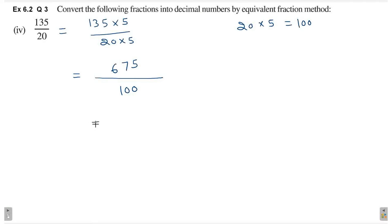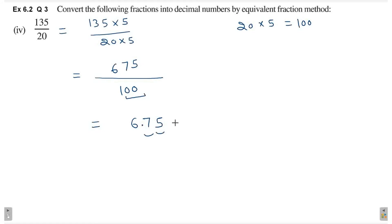Ab hum laga dhenge decimal. Numerator ka number likh lo, 675. Denominator me 1 ke baad hai 2 zeros. So, right more side se 2 digit count karo. 1 digit, 2 digit. Us ke left me laga do decimal. So, 6.75 is the answer. Fifth part hai 17 divided by 4.